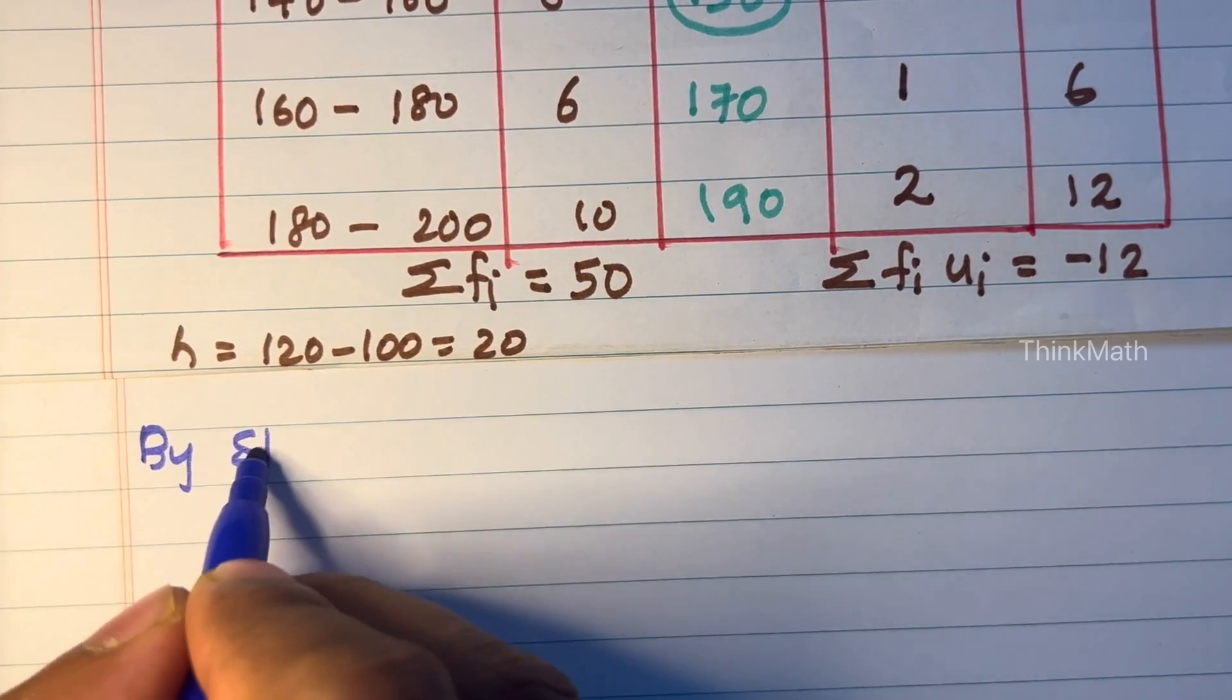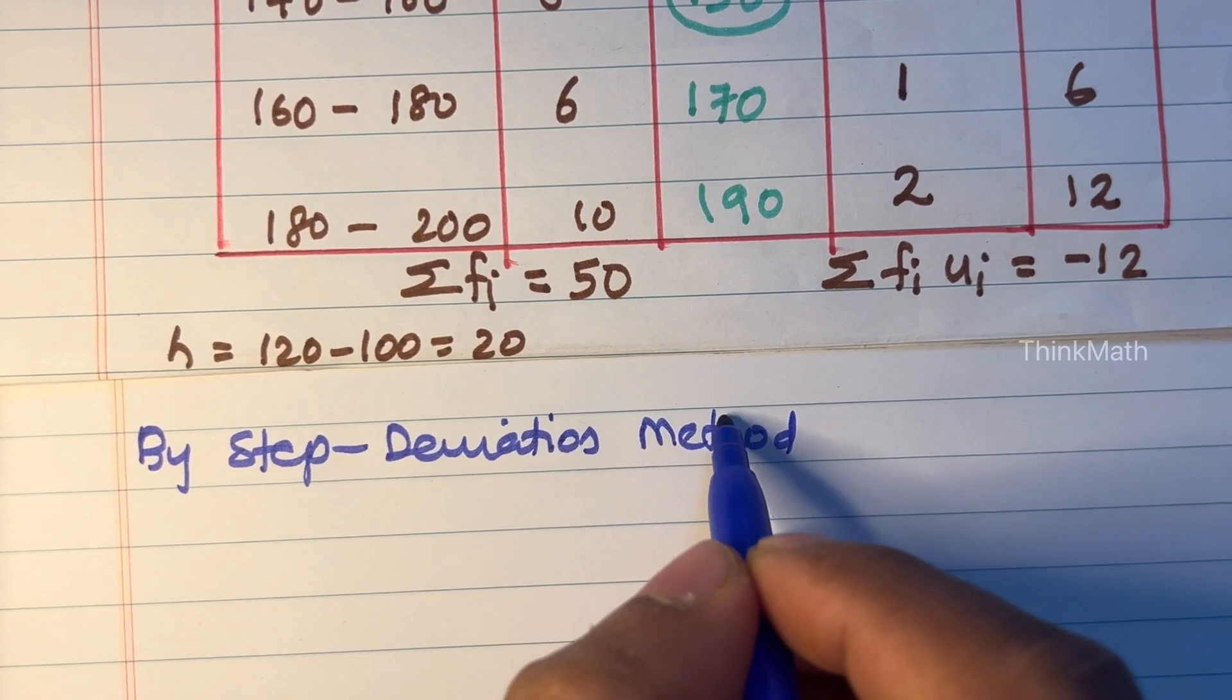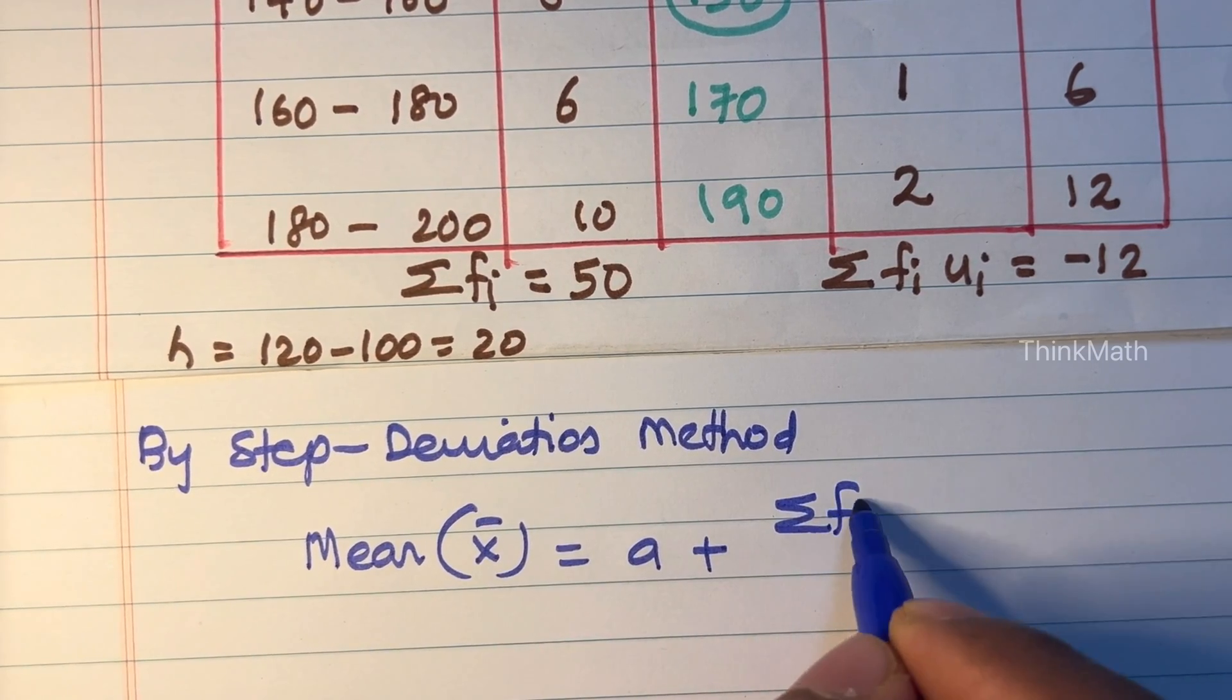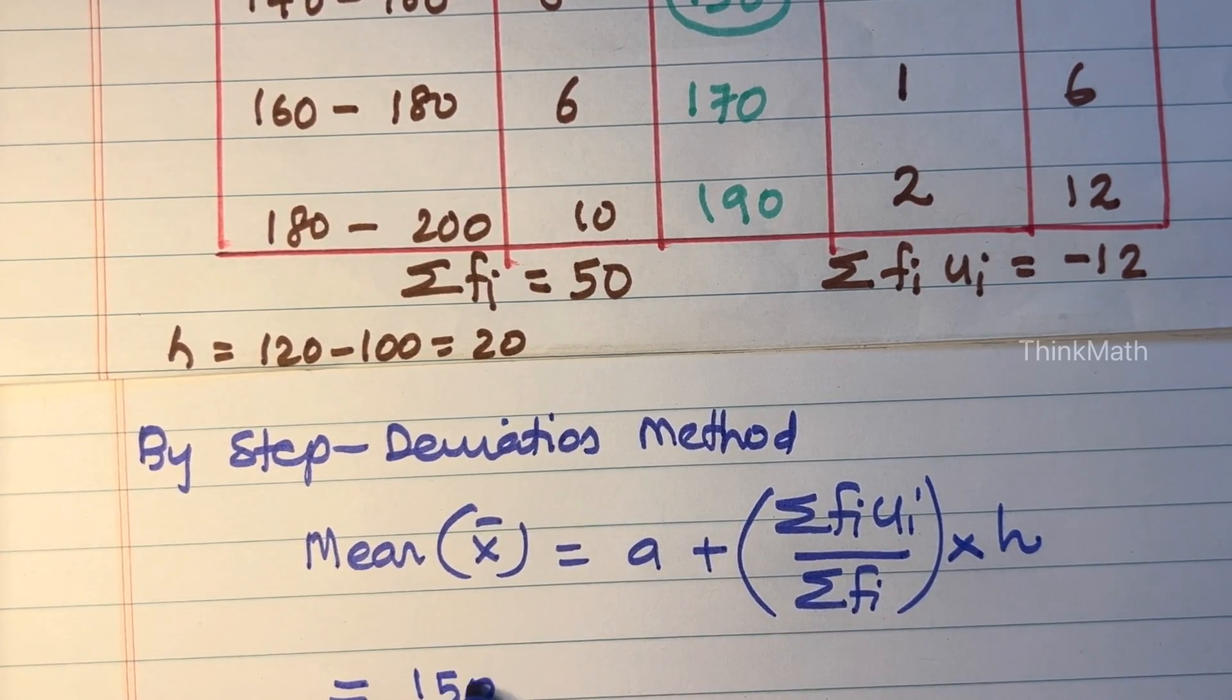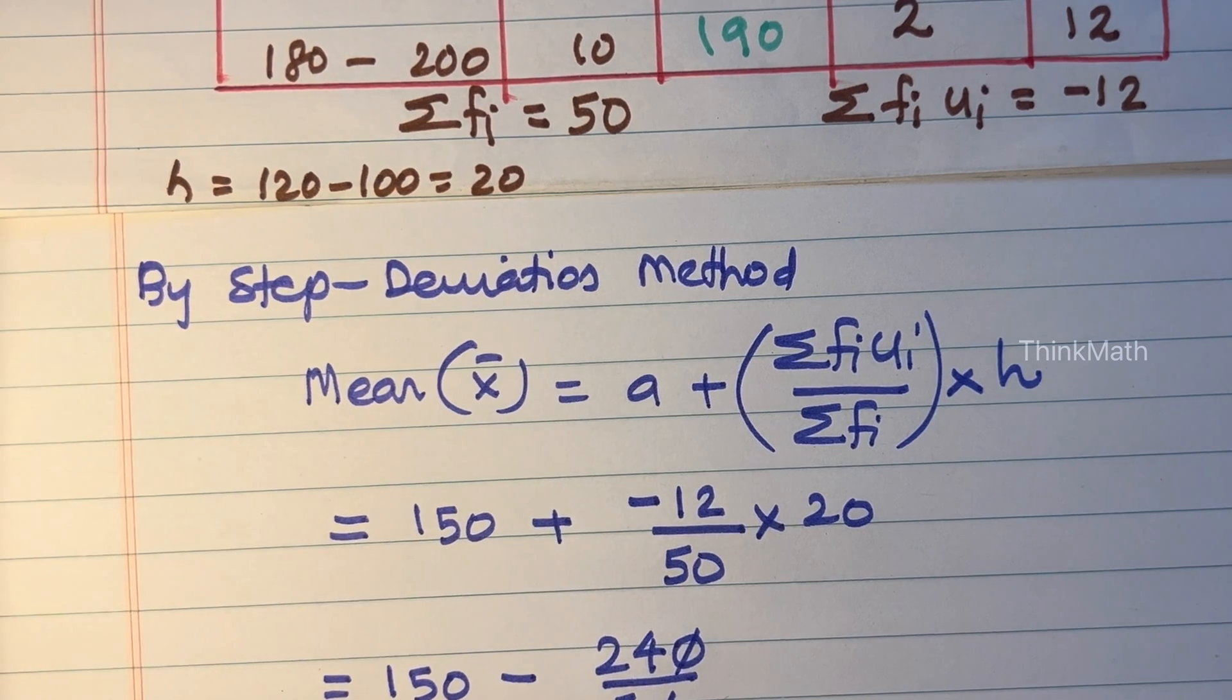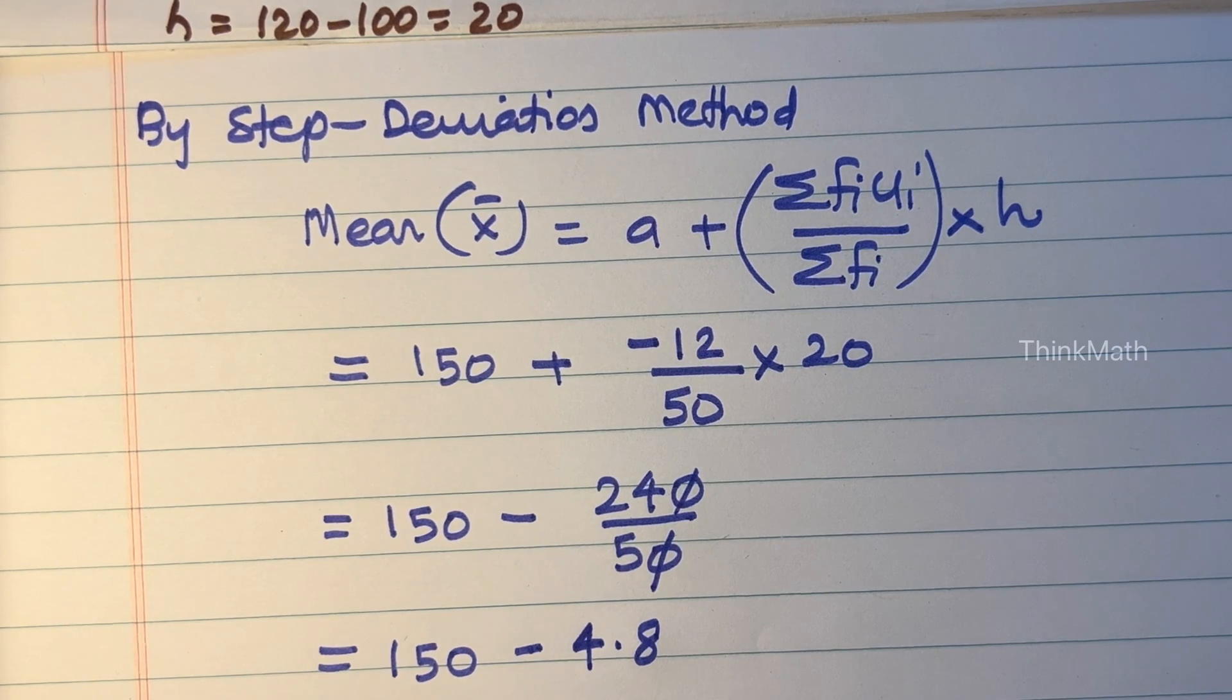So by step deviation method, mean x bar is equal to A plus sigma fi ui divided by sigma fi into H. That is 150 plus minus 12 divided by 50 into 20, equal to 150 minus 12 into 20 is 240 divided by 50. So 150 minus 4.8, 24 by 5 is 4.8. So that is equal to 145.20.